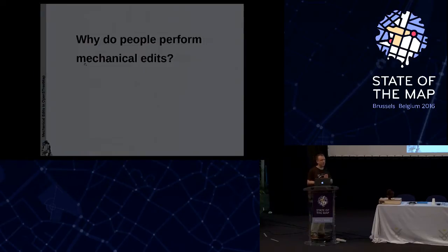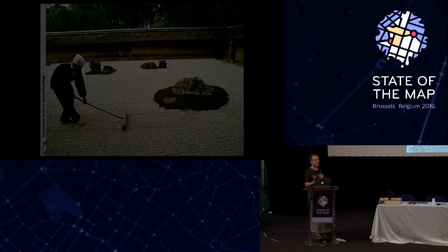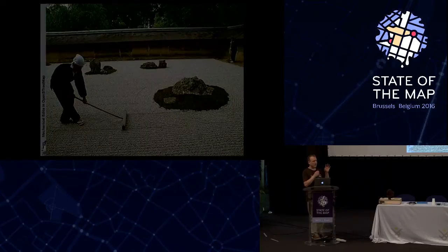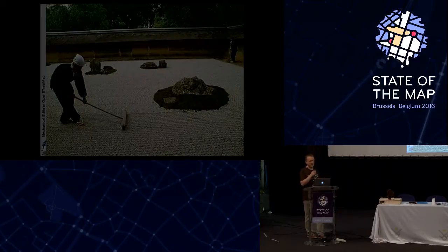Why do people perform mechanical edits? What motivates them? It's mostly gardening — wanting to have a nice, clear landscape in OpenStreetMap without any automated debugging tools showing errors. People want to help, they want to do the right thing, they want to improve the data. But unlike a real gardener who takes scissors to individual dead leaves of a plant, some people overdo it by trying to fix something planet-wide.